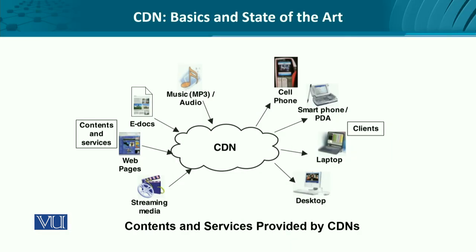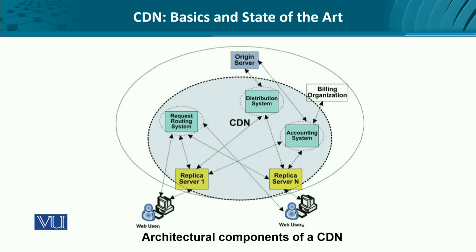Let's look at how typical content delivery networks are involved in providing content — starting from streaming media to web pages to MP3 content. Then certain cell phone services like WhatsApp, we have remote virtual desktops, we have thin clients like laptops, etc. All these contents and services are provided by different kinds of CDNs.